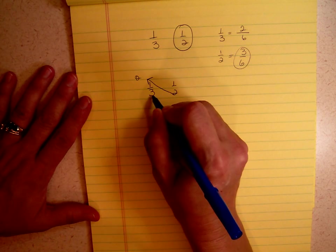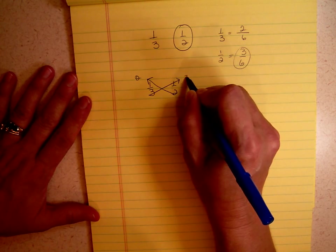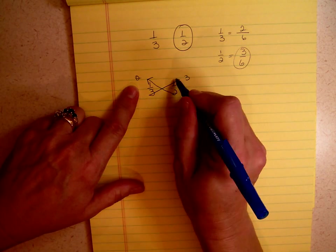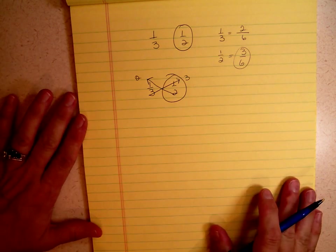2 times 1 is 2. 3 times 1 is 3. Which number's bigger, 2 or 3? It's 3. Therefore, one-half is bigger.